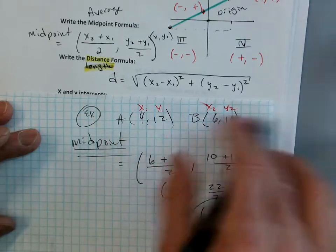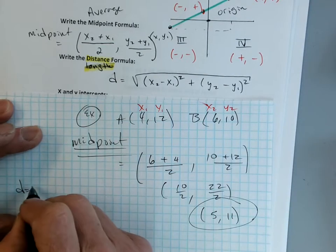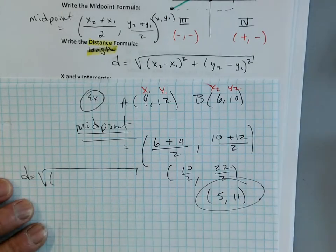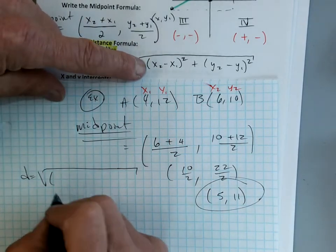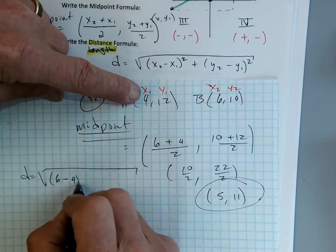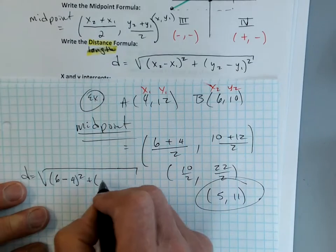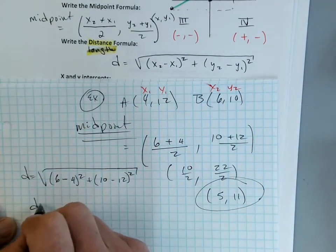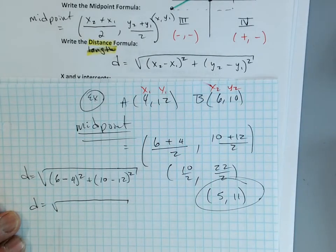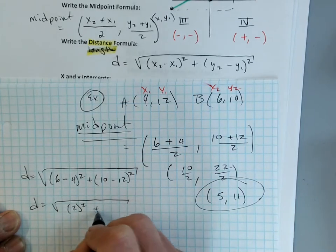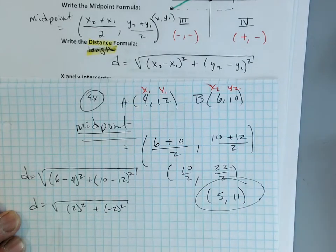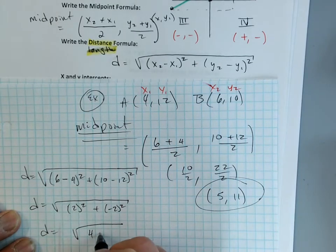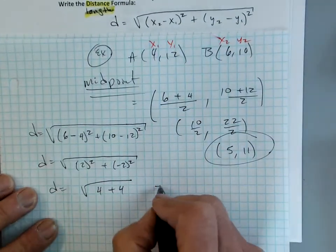Now the distance, or length. If I get going too fast, please tell me to slow down. I'm going to go X2 minus X1 squared plus Y2 minus Y1 squared under the big square root. So that's the square root of (6 minus 4) squared plus (10 minus 12) squared — which gives me 2 squared plus negative 2 squared — the square root of 4 plus 4 — the square root of 8.